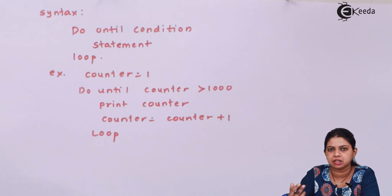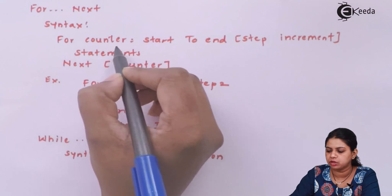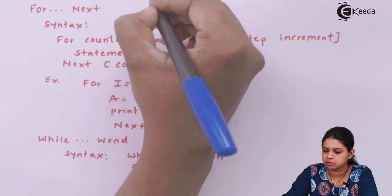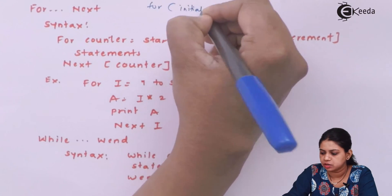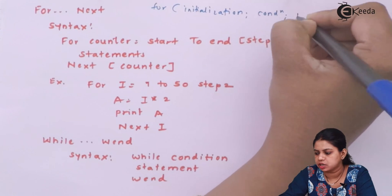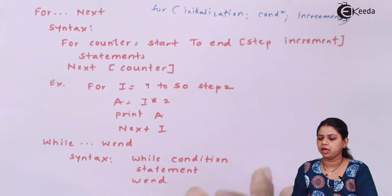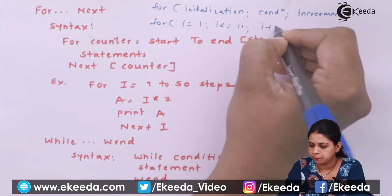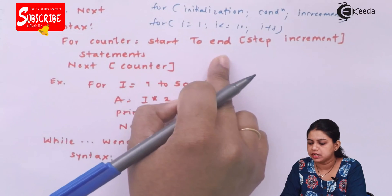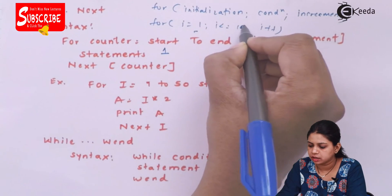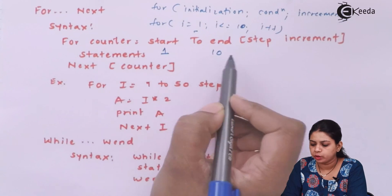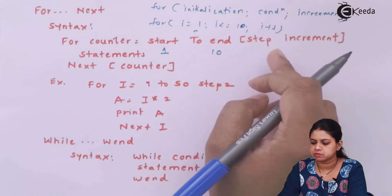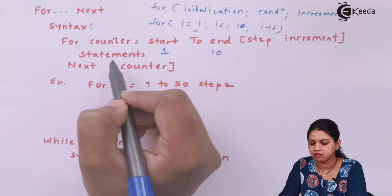For-Next syntax is: For counter equals start To end Step increment. Comparing with C++: for i equals one, i less than equal to 10, i++. Here counter is i, start is one, end is 10, and step increment corresponds to i++. So for counter one to 10, execute a statement and increment counter by one each time.